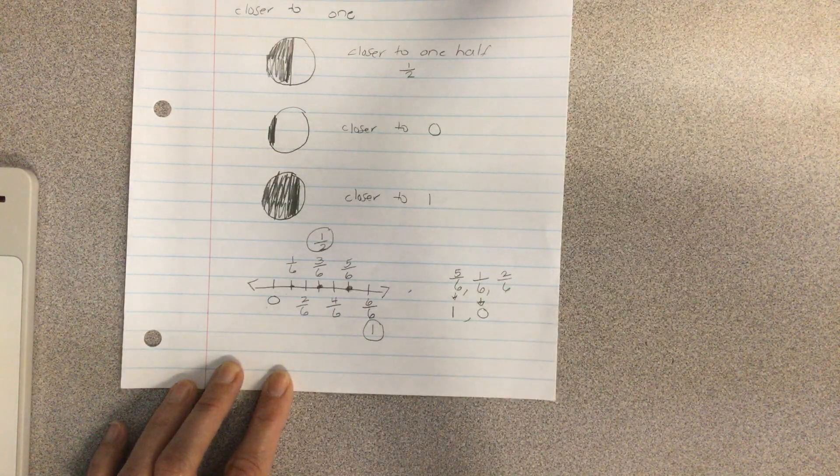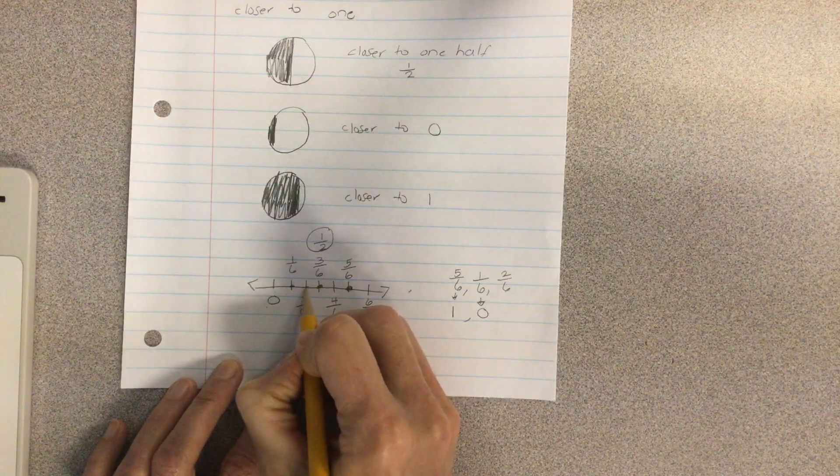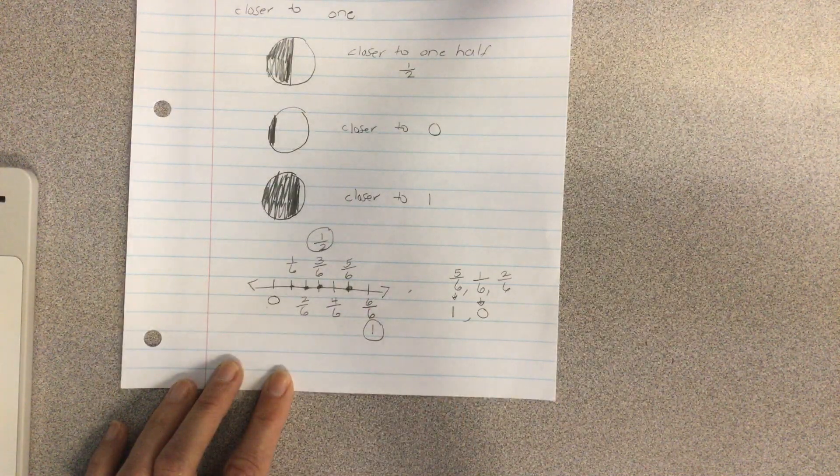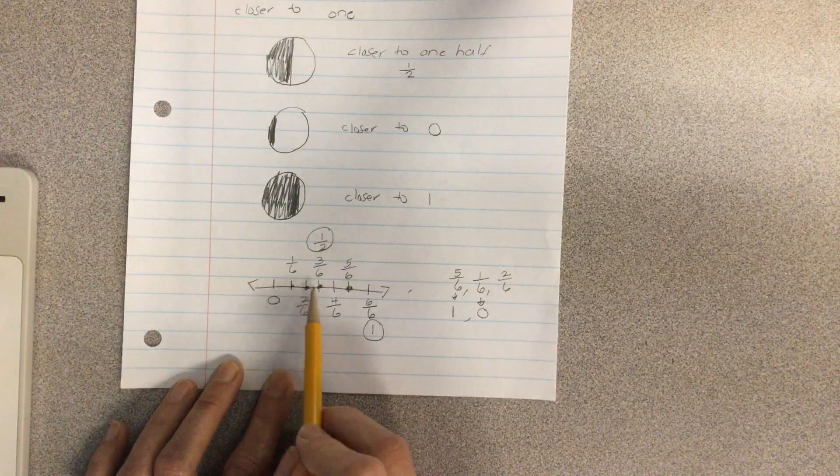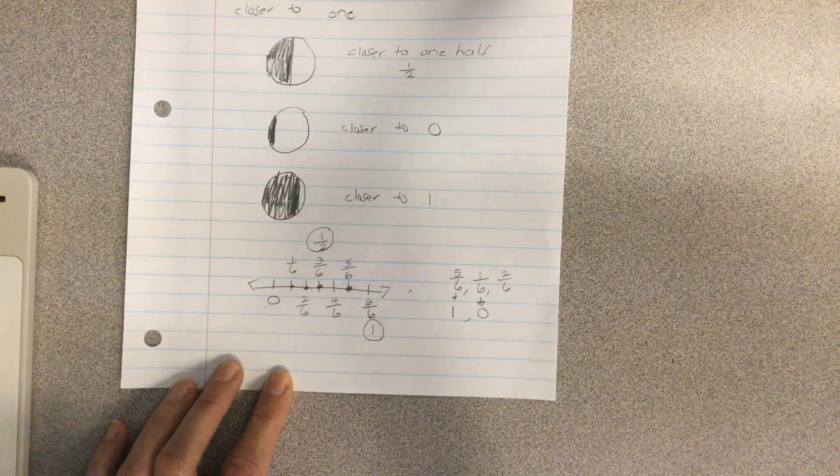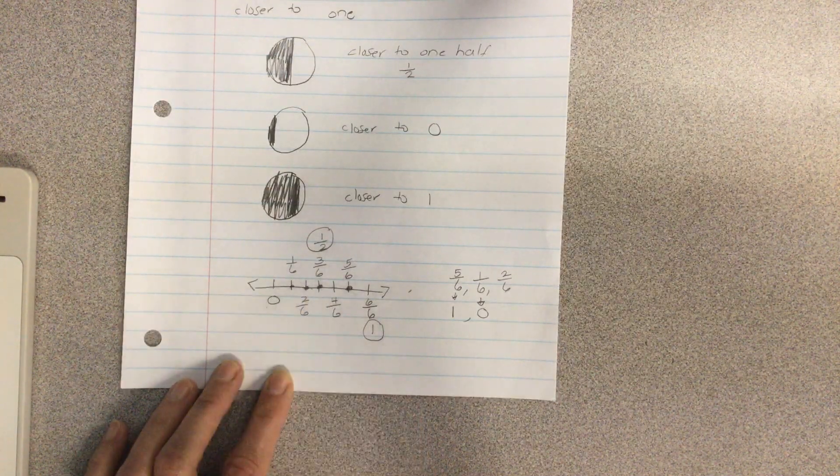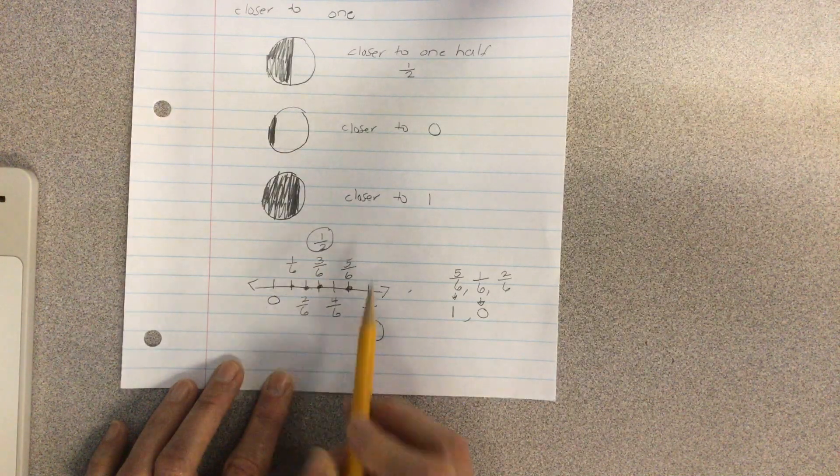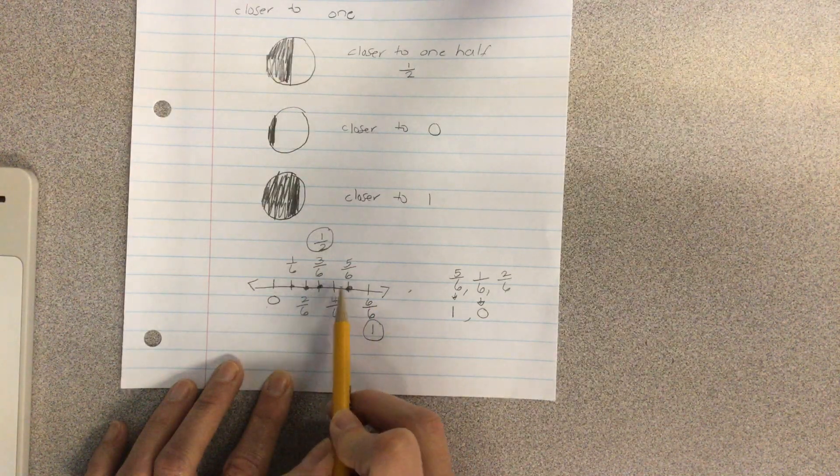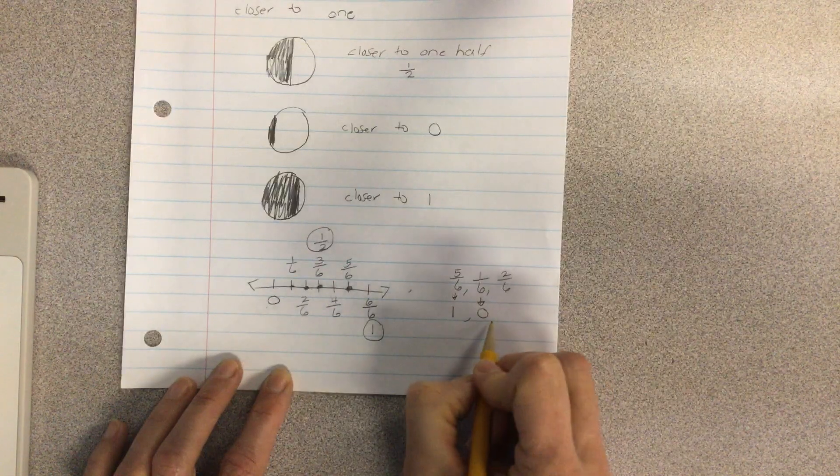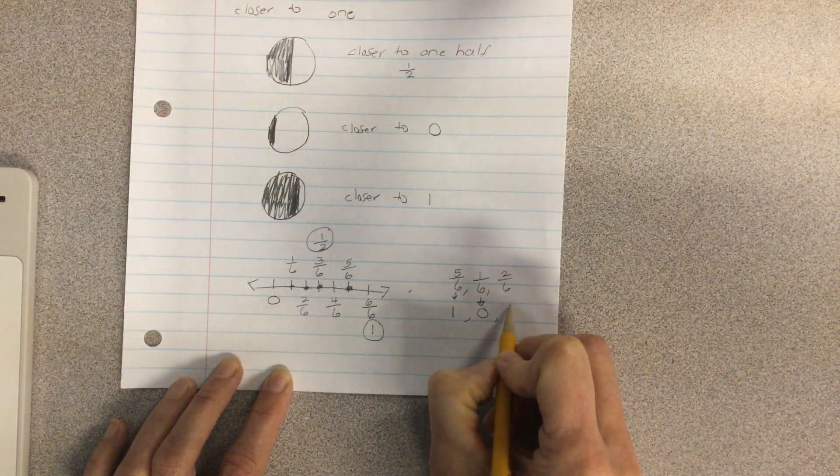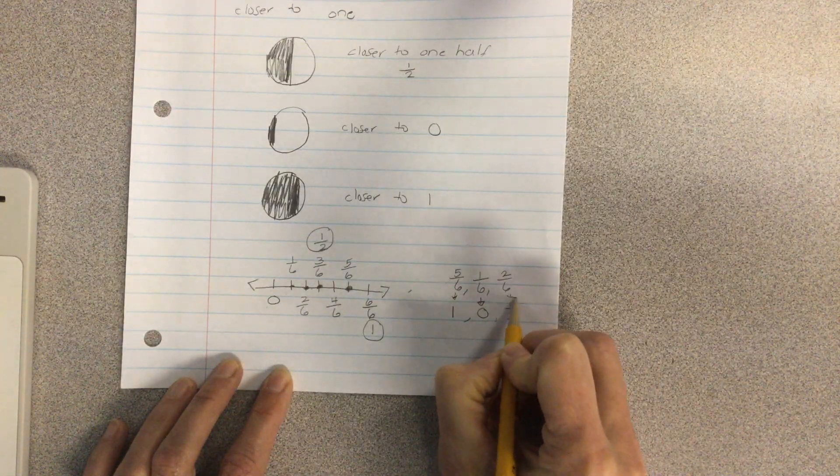And then our last one is two sixths. It is right here. And we have to decide is it closer to zero? It's one, two spaces away from zero. Is it closer to a half? It's one space away from a half. Or is it closer to one? It's one, two, three, four spaces away. Which means that this is closer to one half.